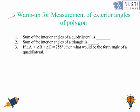So as question number one says, what is the sum of interior angles of a quadrilateral? So that is always equal to 360 degrees. The next is sum of interior angle of a triangle, which is 180 degrees.